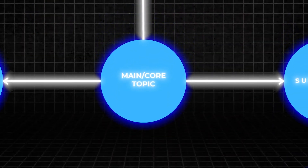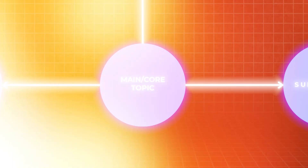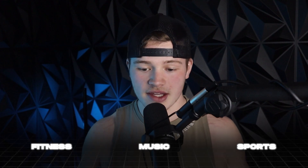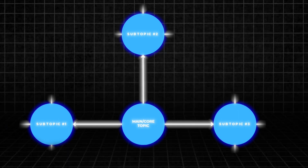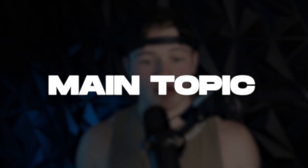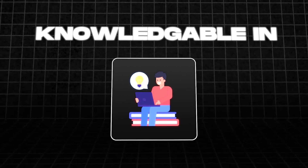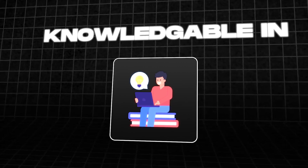So first things first, you're going to want to come up with a main or core topic, and this is going to be more of a broader topic. For example, it could be fitness, music, sports — just something that can be broken up into smaller subtopics. You want to pick a main topic that you're knowledgeable in or an expert in, and it doesn't necessarily have to be what you're teaching people, but just something that you know a lot about.